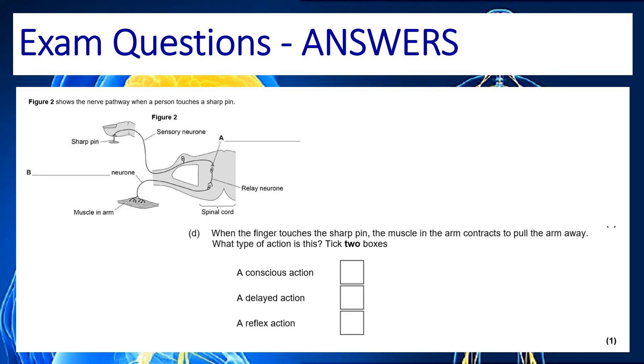So in this question we've been asked to identify what kind of action is taking place when we pull our finger away from the pin. If you remember because it goes through the spinal cord not the brain we don't think about it so it's not conscious it's not delayed otherwise you'd hurt yourself it's reflex action.